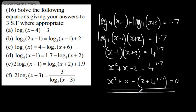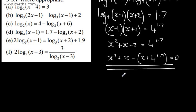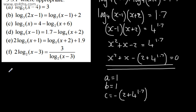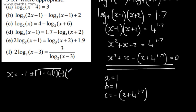So (x minus 1)(x plus 2) equals 4 to the power of 1.7, since 1.7 is the power 4 is raised by to get that expression. Expanding gives the quadratic x² plus x minus 2 equals 4 to the power of 1.7. Rearranging: x² plus x minus (2 plus 4 to the power of 1.7) equals 0. This is in the form ax² plus bx plus c equals 0, with a equals 1, b equals 1, and c equals negative (2 plus 4 to the power 1.7). Using the quadratic formula gives x approximately equals 3.08 or x equals negative 4.08.